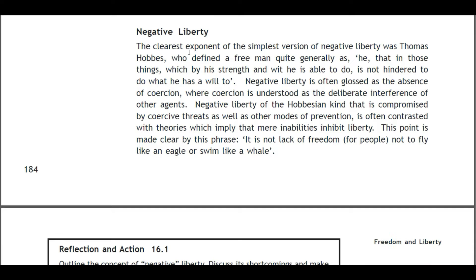Negative Liberty: The clearest exponent of the simplest version of negative liberty was Thomas Hobbes, who defined a free man quite generally as one that in those things which by his strength he is able to do is not hindered. Negative liberty is often glossed as the absence of coercion, where coercion is understood as the deliberate interference of other agents. Negative liberty of the Hobbesian kind — that which is compromised by coercive threats as well as other modes of prevention — is often contrasted with theories which imply that mere inabilities inhibit liberty. This point is made clear by the phrase: it is not a lack of freedom for people not to fly like an eagle or swim like a whale.